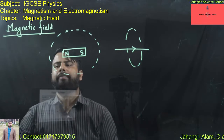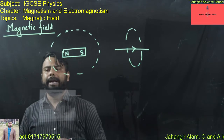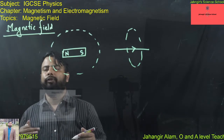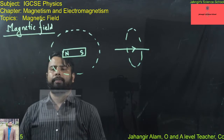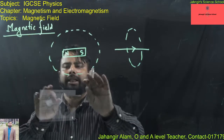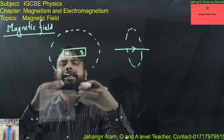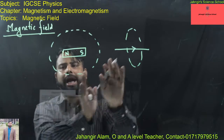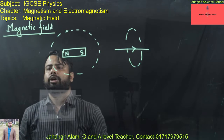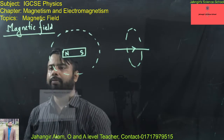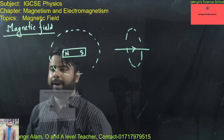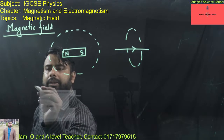The shape of the magnetic field can be shown by iron filings or a plotting compass. We can find out the magnetic field pattern around a magnet or current-carrying wire by using iron filings or a plotting compass.